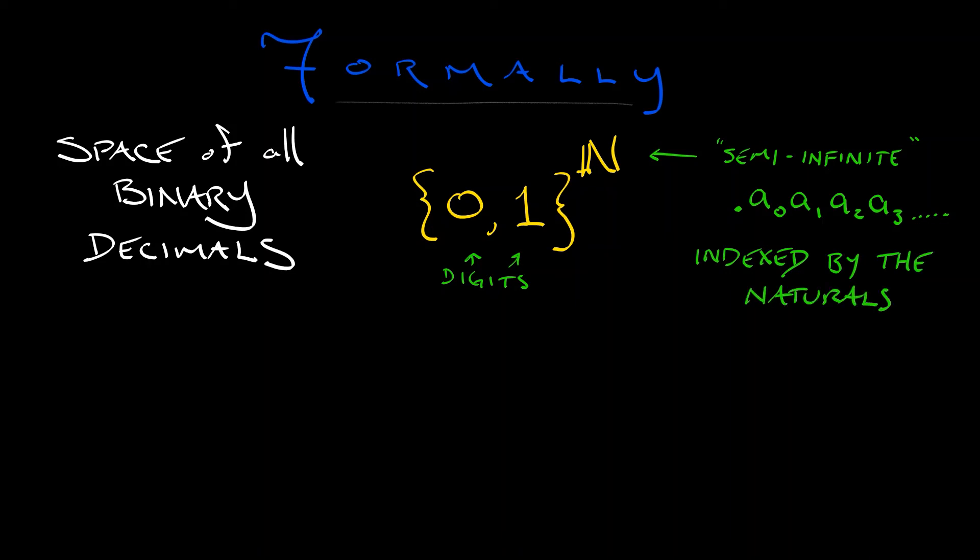These are indexed by the natural numbers N; that's why we're using this notation. Now if you've seen anything in language theory or automata theory in computer science, this is going to be familiar notation. If not, don't worry about it too much. Try to think of this as formal notation for semi-infinite sequences of digits zero and one.